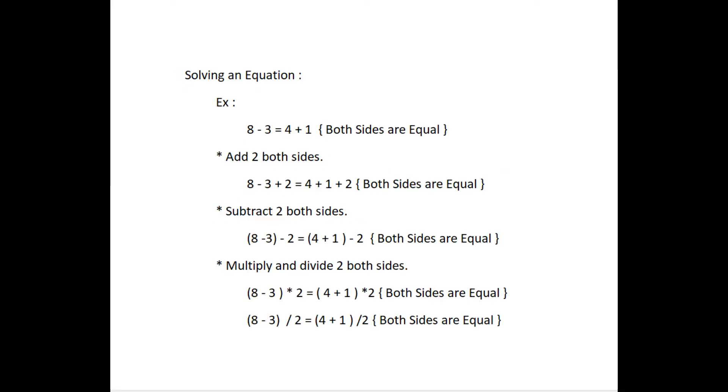Next, we will see about how to solve the equations. Consider the equality 8 minus 3 equal to 4 plus 1. Here, the value of both sides are equal. Let us now add 2 to both sides. We get 8 minus 3 plus 2 equal to 4 plus 1 plus 2 equal to 7. Both sides are equal. That is, if we add the same number to both sides of an equality, it still holds.